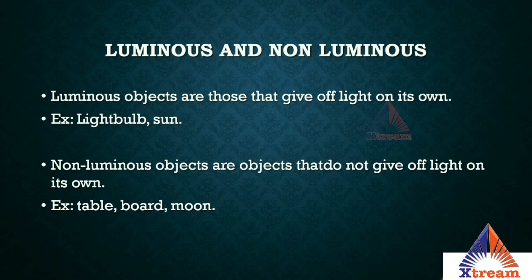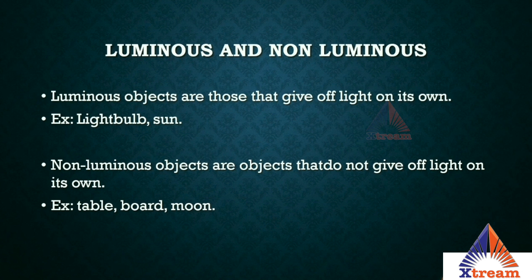Non-luminous objects are exactly opposite to luminous objects. Objects that cannot emit light energy by themselves are known as non-luminous objects. They do not cause the sensation of light on their own and are visible only because of luminous objects — they are dependent on luminous objects to show themselves. For example, the moon, plants, table, and board are non-luminous objects.